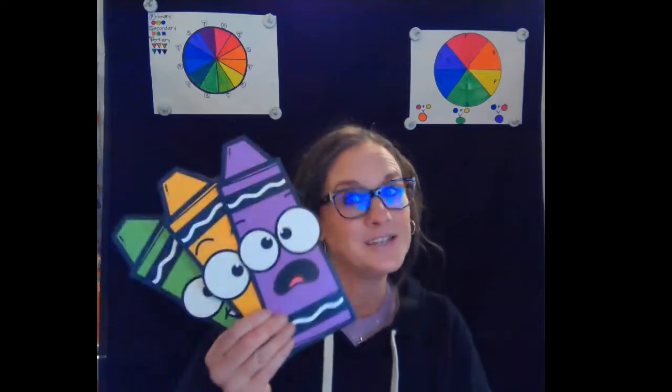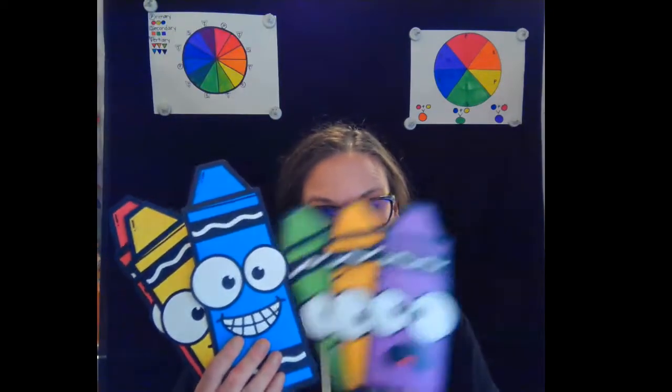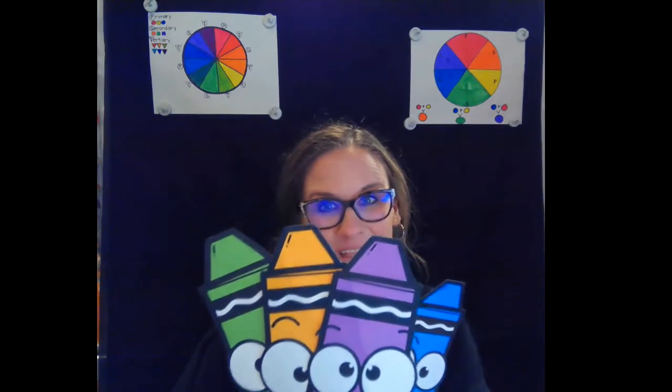We have learned about the primary colors: red, yellow, and blue. They're the most important colors, remember that. We've also learned that the primary colors create the secondary colors: purple, green, and orange. They're our second group of colors because the primary colors, mixing them together, creates our secondary.